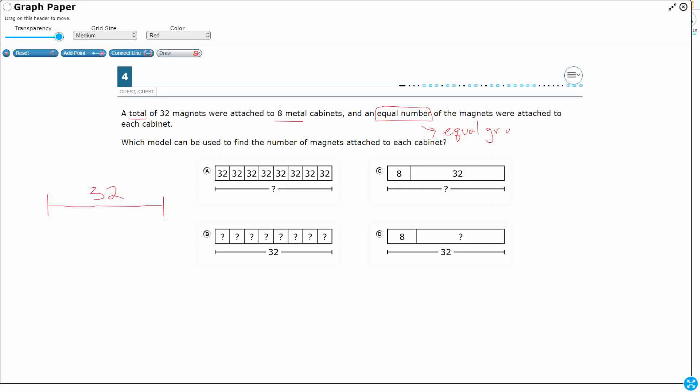is whenever you see anything that says equal groups, so it could be equal number, equal groups, the same number in each group. Whenever the problem says that you've got equal groups in some way, that means that we're dealing with either multiplication or division.